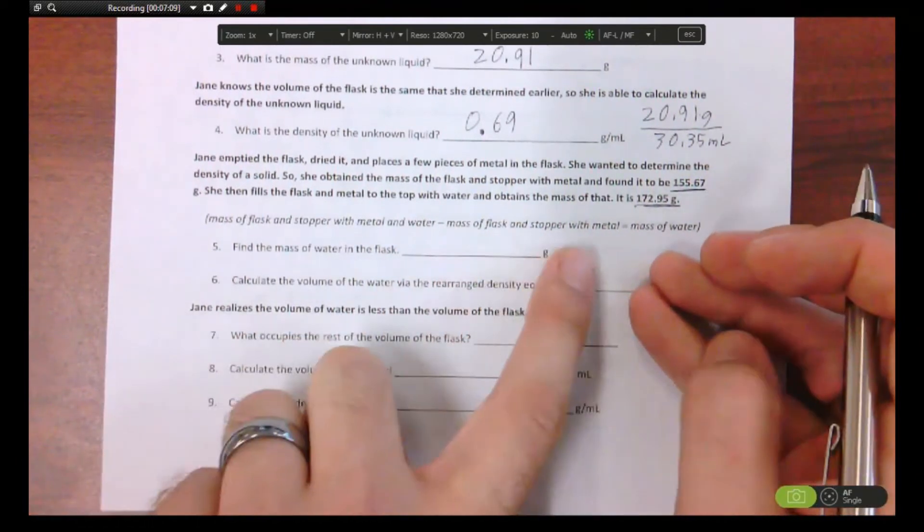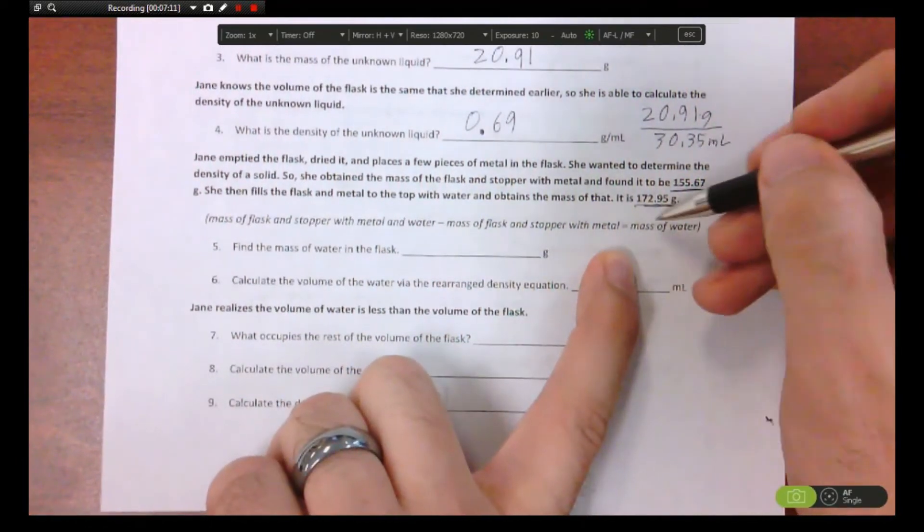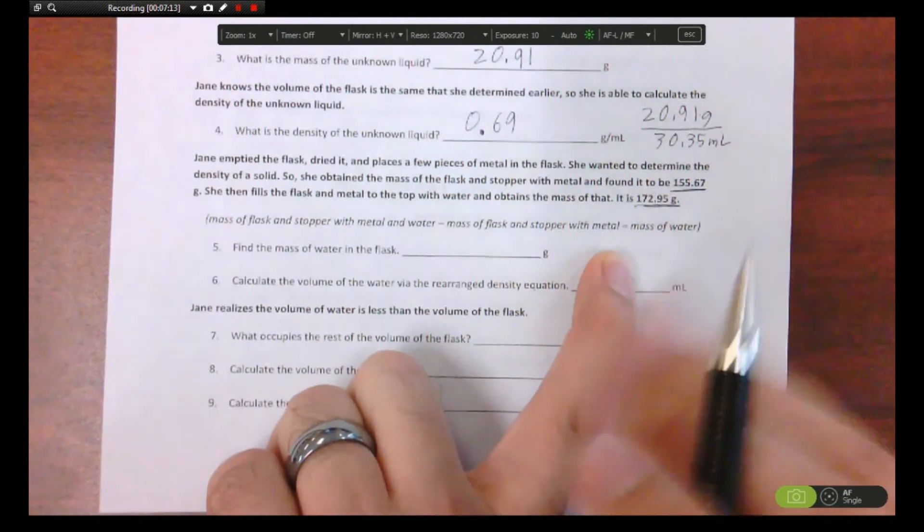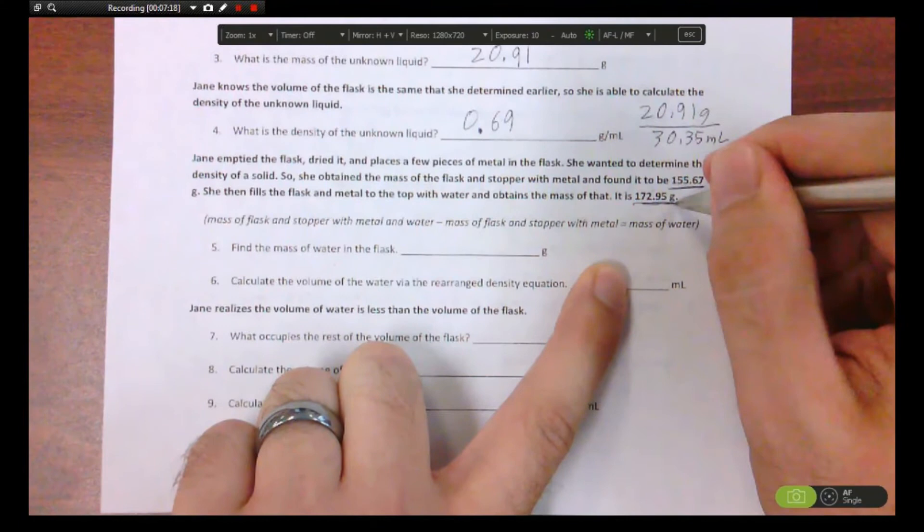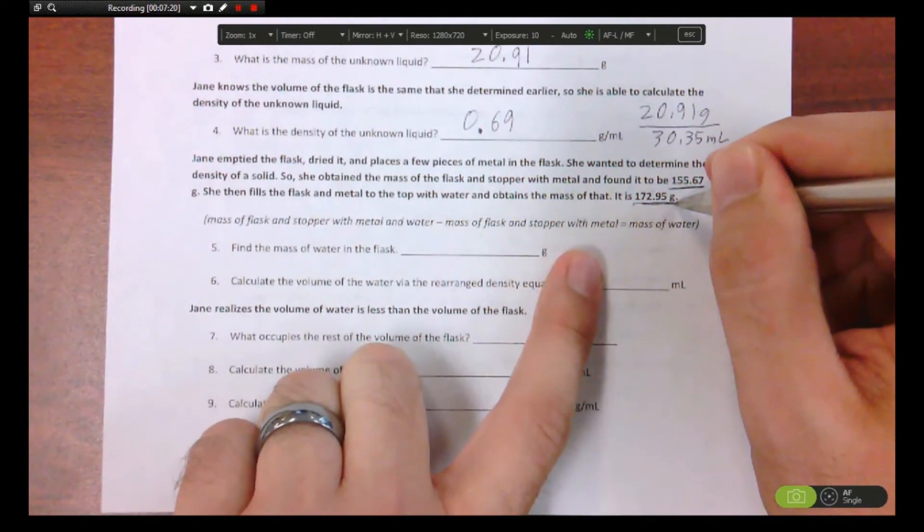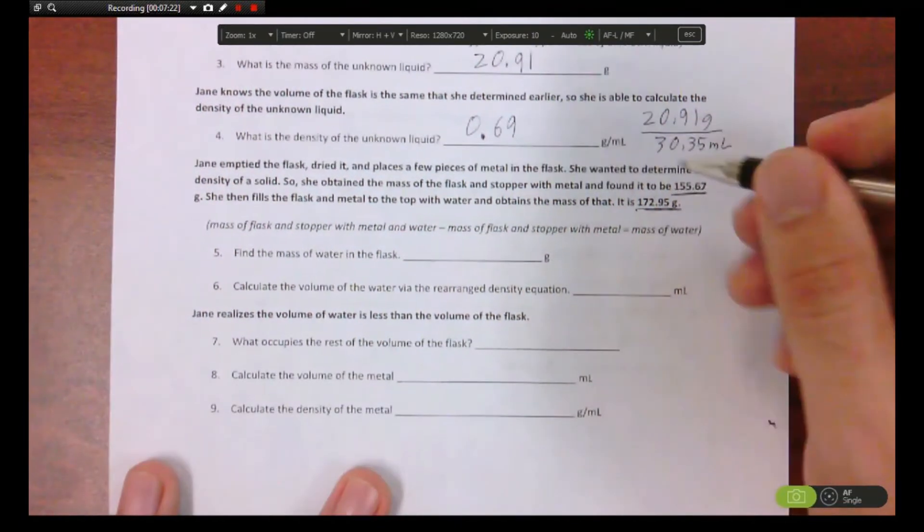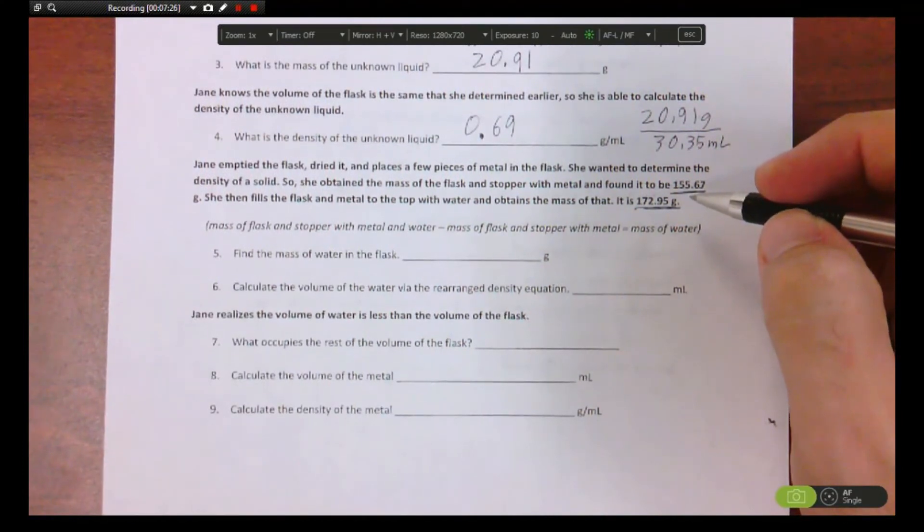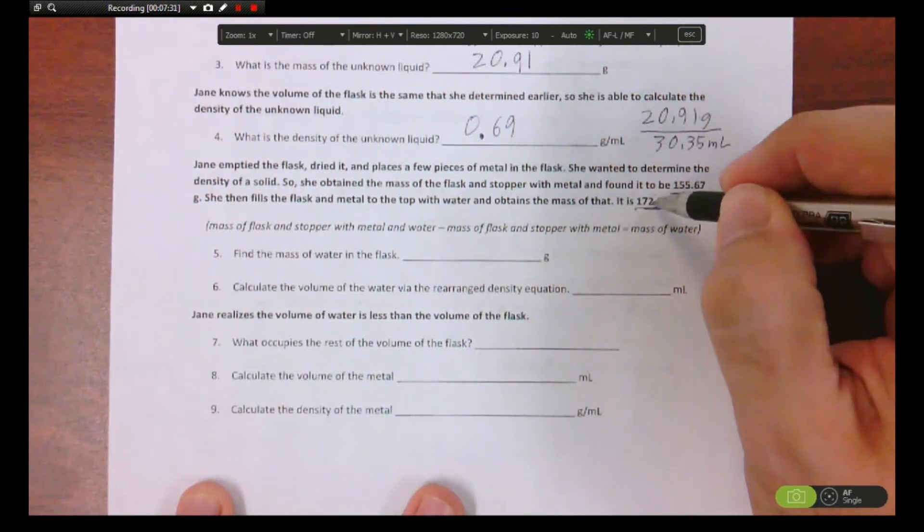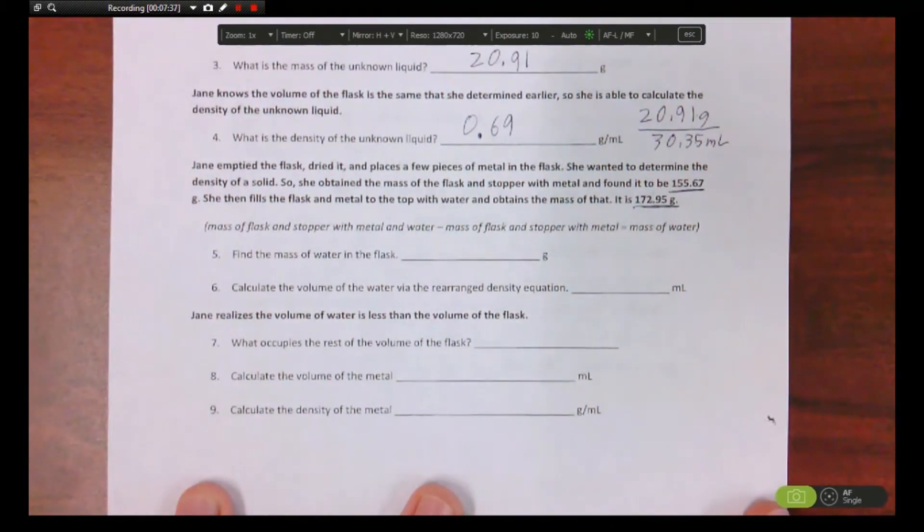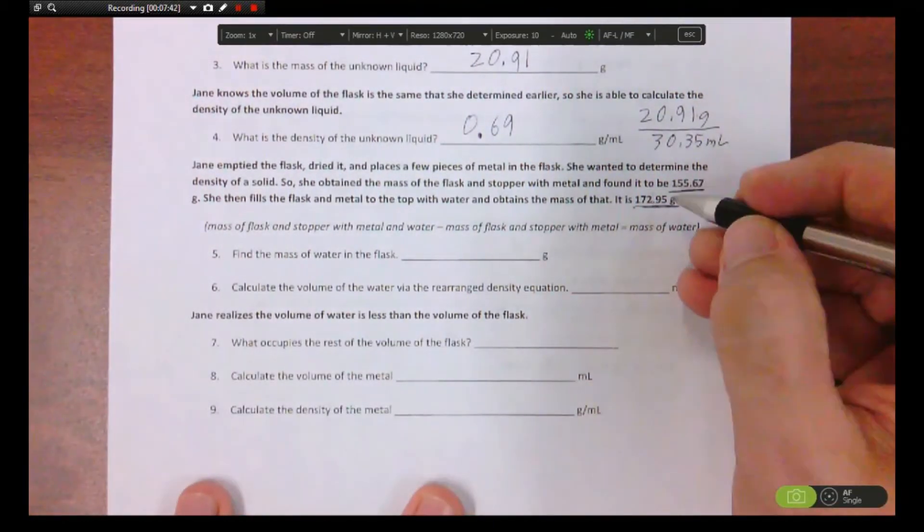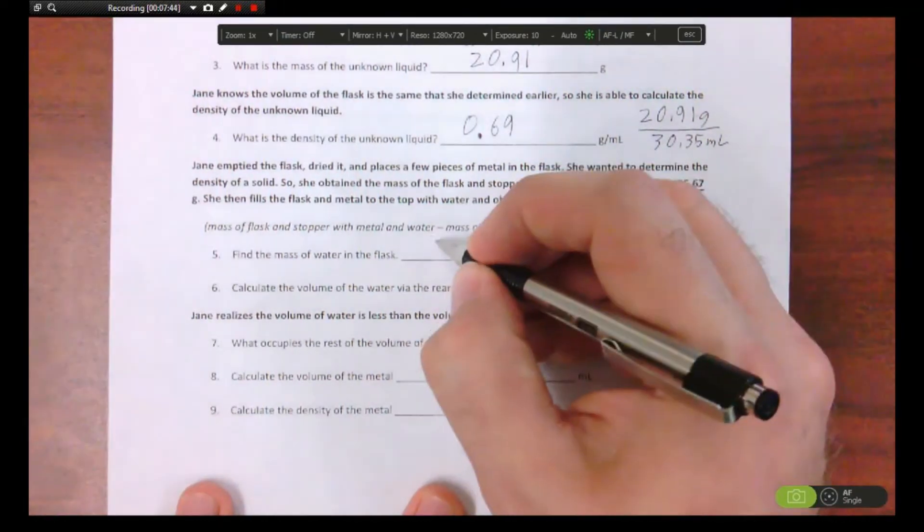But yeah, let's actually go through it. Find the mass of the water in the flask. Well, the mass of the flask and stopper with the metal minus the mass of the flask and stopper with the metal, god this is a little blah blah blah, will give you the mass of the water. So basically saying take this value right now, this value right here, because it's with the water, and subtract it. So when you subtract these two values, so you got this value which is filled with water and this is the metal with no water, if you subtract the two, that's just going to give you the mass of the water that's in the flask, right? It's a lot of objects but it does work out. So basically this minus this, you get what? Yeah, okay.